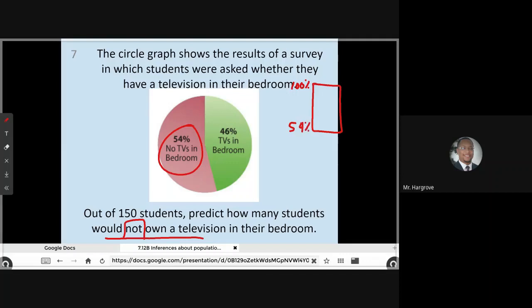And this is going to be 100%. And since we're talking about students that do not own a TV, I am going to use this 54%. 54% do not own a TV. And the total number of students that we're looking at, it says out of 150. So I'm going to put 150 up here to match with 100% and x will go here. And we're going to cross multiply and solve for x.